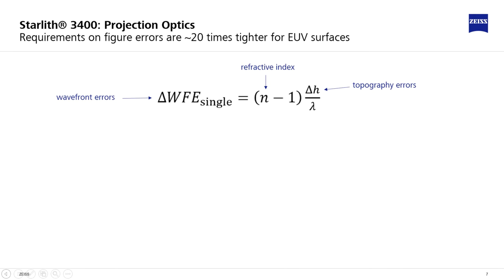Aberration-driven wavefront errors are usually specified in units of the wavelength lambda. For a single surface, the aberrations are given by (n-1) times delta H over lambda, where delta H are the topography errors.